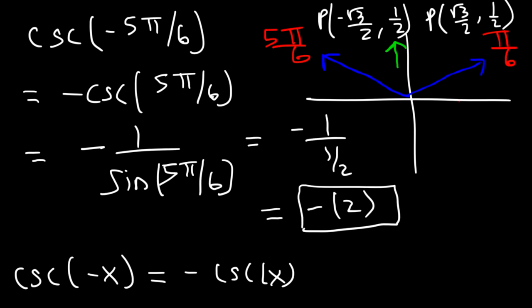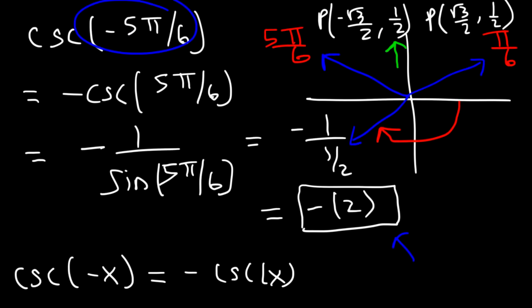Negative 5π/6 is in quadrant 3, and in quadrant 3 the y-value is negative. So that's why cosecant of negative 5π/6 is negative overall — if you plot this angle it falls in quadrant 3, where y is negative.